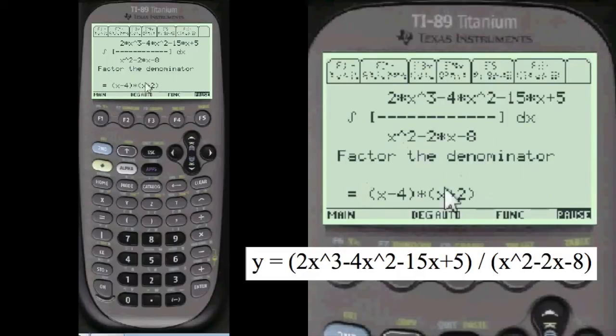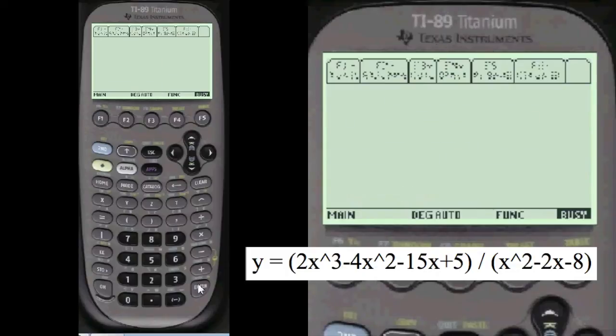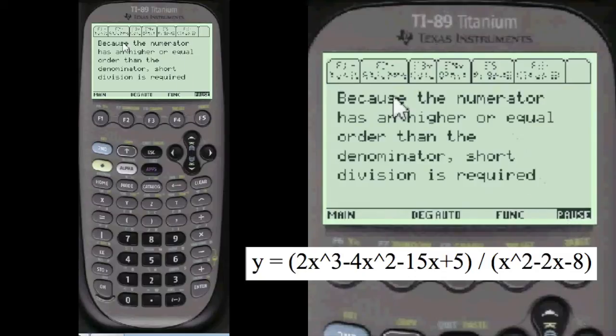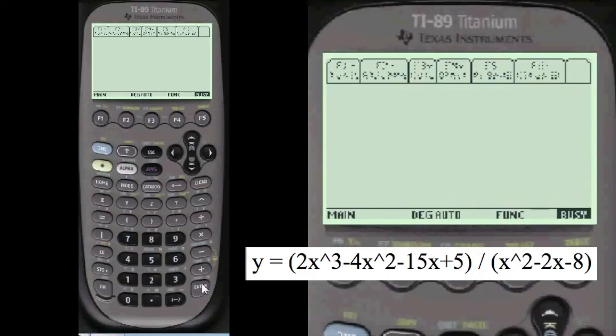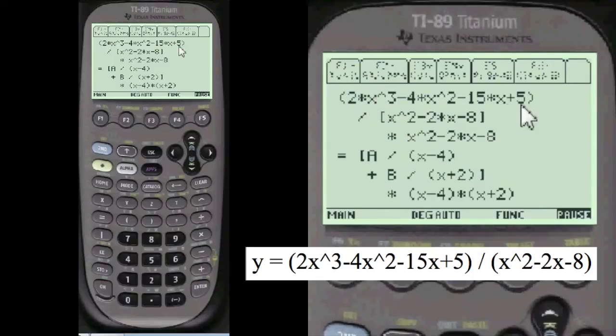And so let's do it. First thing you do is factor the denominator here. It's loading programs again. But once it's loaded it's quick on your calculator. But these are long programs. Because the numerator is higher than or equal to the denominator you have to use short division. So 2x cubed divided by x squared is 2x. And that will be added to the answer at the end. This is a quotient. And that will be added to the answer at the end. Calculator is computing. And you write all this on your paper, of course.